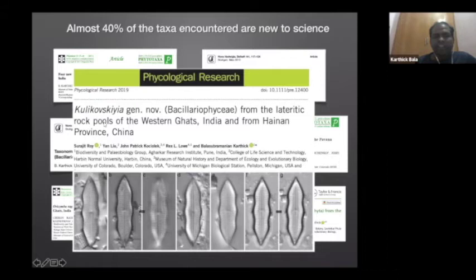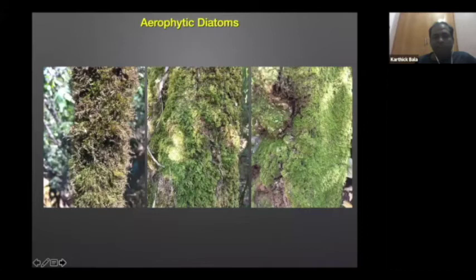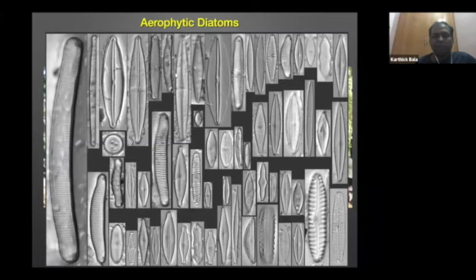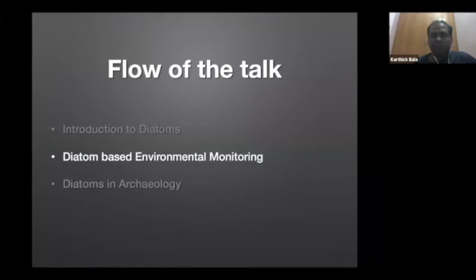Apart from aquatic bodies like rivers and lakes, we accidentally looked into moss on trees during fieldwork in the Western Ghats. There was heavy growth of moss on the trees, and when we touched it, we felt moisture. We thought there could be diatoms in the moss. When we looked under the microscope, we found so many species, and most of them were new to science. We are in the process of describing these species. With this, I conclude my first part on the introduction of diatoms.